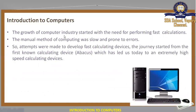The growth of the computer industry started with the need for performing fast calculations. Manual methods of computing were slow and prone to errors. A man cannot work faster than a computer in calculation — machines are faster than men. This is the reason why most of our organizations are computerized. It does not mean a man cannot do calculations, but compared to him, computers can perform calculations much faster.